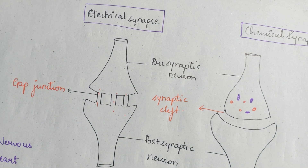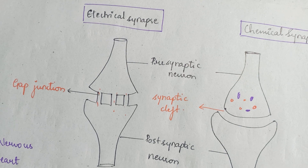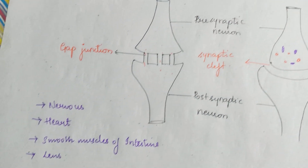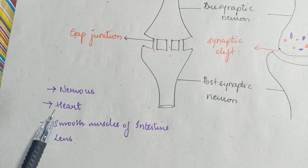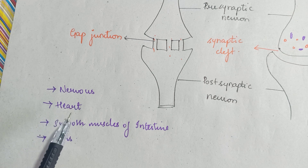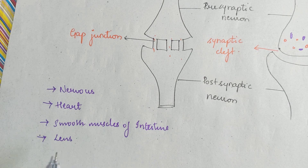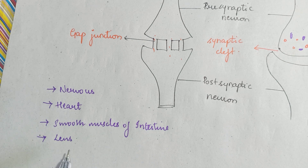The electrical synapse is found in neurons of the nervous system, in the heart — that is the cardiac muscles — and it is also seen in smooth muscles of the intestine and in the epithelial cells of the lens of the eyes.